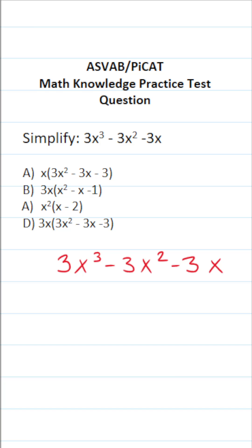So we're trying to simplify this expression. As I look at this expression, I can see each of these terms—3x to the third, 3x squared, and 3x—all have a 3x in common. So I'm going to factor out a 3x, and this leaves me with x squared minus x minus 1.